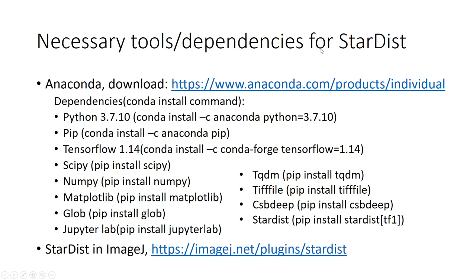These are the necessary dependencies for StarDist. Download Anaconda from the provided link. The dependencies include Python, pip, TensorFlow, SciPy, NumPy, Matplotlib, glob, JupyterLab, tqdm, tifffile, csbdeep, and StarDist. These can be installed in your Conda environment by copying the provided command. Please follow the specific versions provided for Python and TensorFlow — using a newer version of TensorFlow or Python may cause problems with the training process.